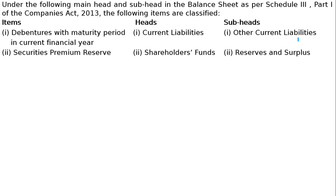Second item: securities premium reserve. As you know, when we issue shares and securities — equity shares, preference shares, debentures, etc. — the premium collected is part of shareholder funds. This is classified under shareholders' funds and is the reserves and surplus, as it is undistributed capital profit.